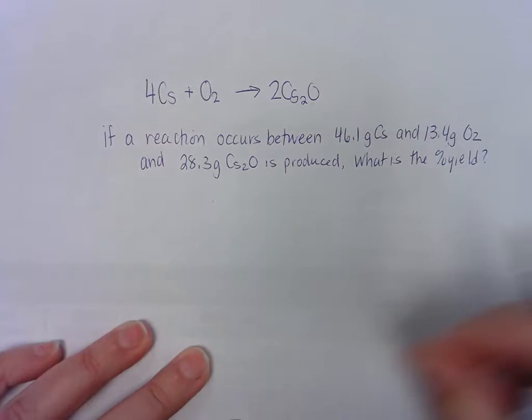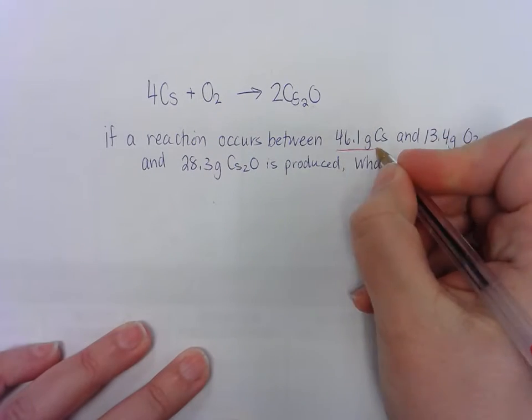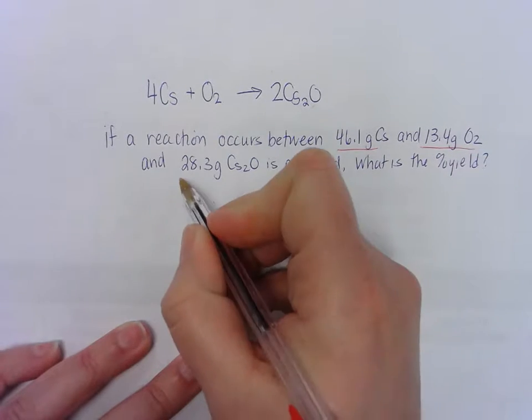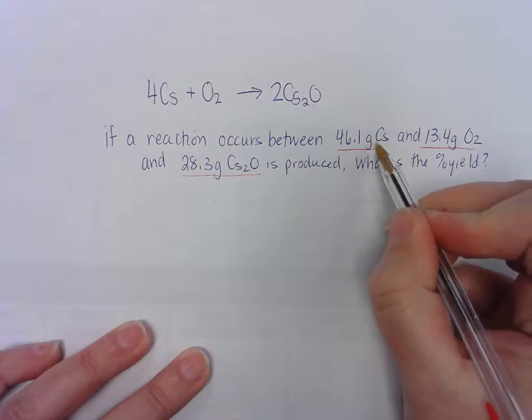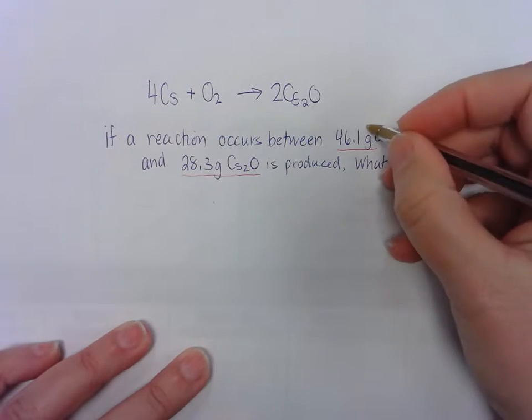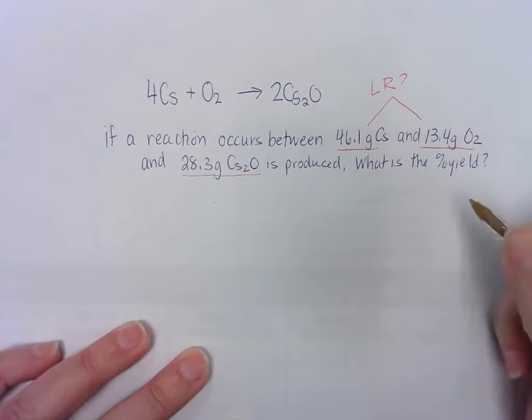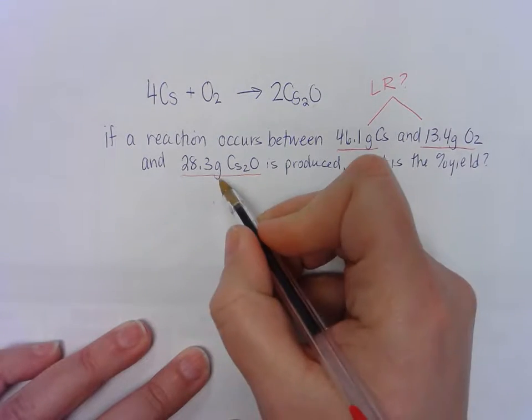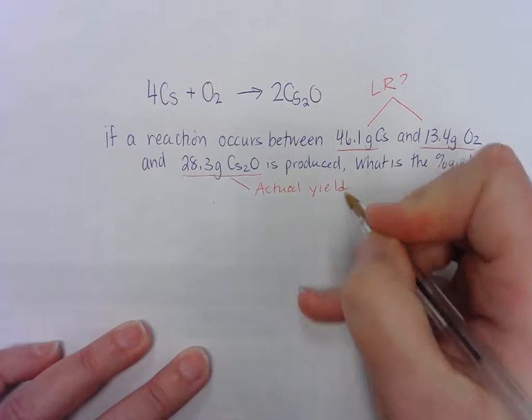So what's going on in this problem is it's a little more complex. You have three numbers. You have these two, and then you have this third one here. The first two are both reactants. So you're going to use these to decide which one is the limiting reactant, and then you're going to take the limiting reactant and use this actual yield to find the percent yield.